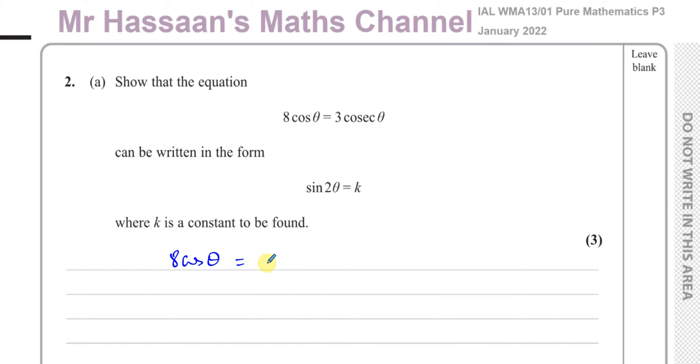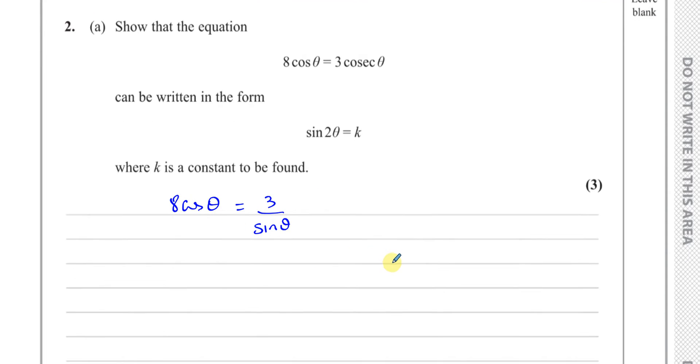Cosec is the reciprocal of sine, so I'll write this as 3 over sin θ. Okay, this is 3 times 1 over sin θ. Now let's get rid of the fraction. Let's multiply both sides of the equation by sin θ, in which case we'll have 8 times sin θ times cos θ equals 3.